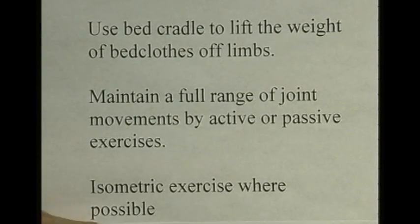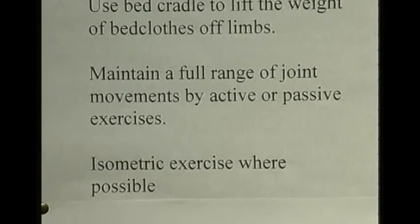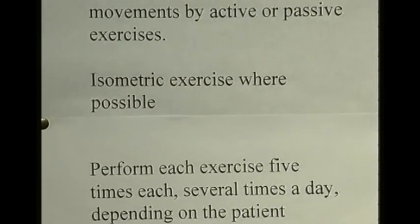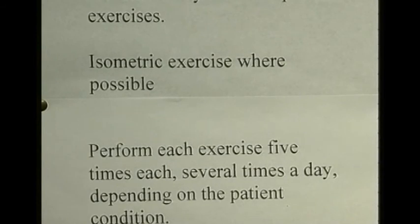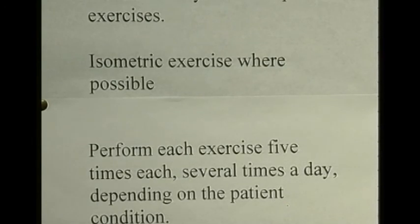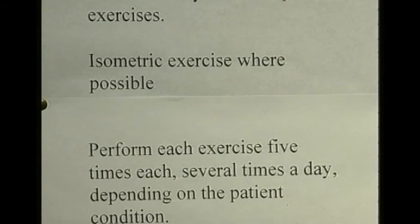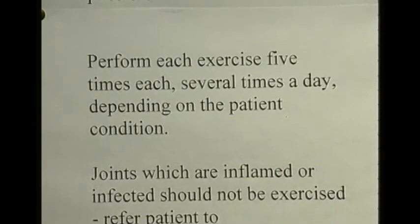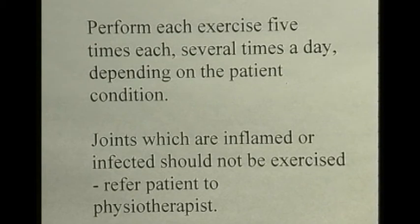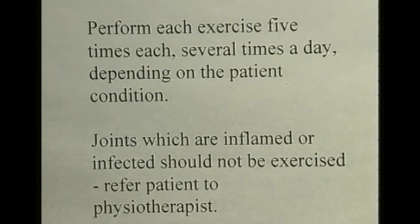Sometimes if the patient can't actually move themselves, it is worth doing isometric exercises — an isometric exercise is simply tensing a muscle with no resulting movement of the limb. Each exercise should be performed at least five times, several times a day. Move each joint at least five times through its full range of movements, several times a day. Keep them moving as much as possible. If there is no reason not to move the joint, make sure it keeps moving regularly.